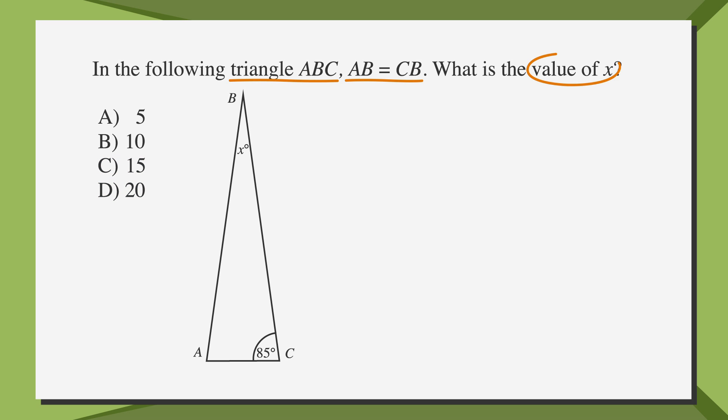Remember to underline the facts, circle the key words, and label the answer choices. Okay, we know that the length of AB is the same as the length of BC. We can mark that on our triangle by drawing double short hash marks on both sides. And since we know that those two sides are equal, we now know that the angles opposite them, angles A and C, are also equal. That means that since angle C is 85 degrees, angle A must also be 85 degrees. Label it.